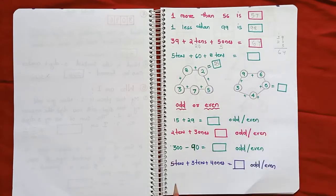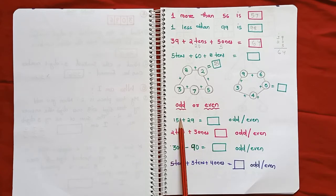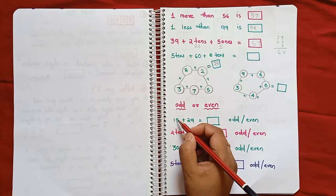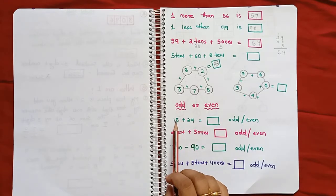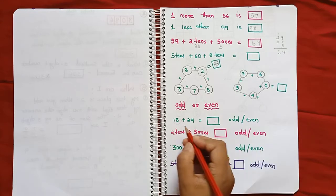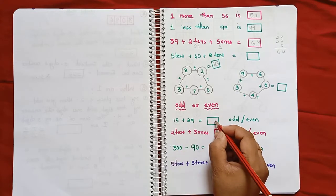The next topic is odd and even numbers. If the ones place digit is 0, 2, 4, 6, or 8, then the number is even. If the ones place digit is 1, 3, 5, 7, or 9, then the number is odd. You only need to check the ones place. But here we have to do something different — first we add, then check if the answer is odd or even. For example, 9 plus 5 equals 14.